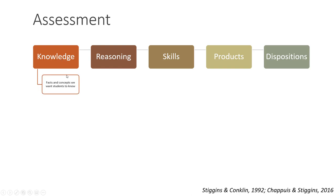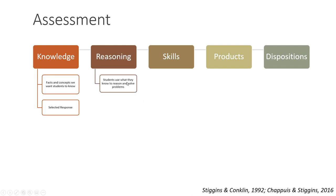Knowledge refers to facts and concepts — what we talked about as remembering and understanding. We typically assess this with selected response items: multiple choice, true/false, fill-in-the-blank, or short responses. For reasoning, we want to know that students use what they know to reason and solve problems — how they work their way through a problem, issue, or concept. We assess reasoning through constructed responses or extended responses.